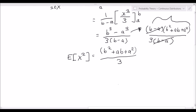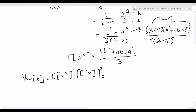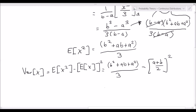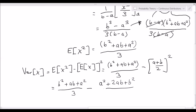But we're not done yet. The variance of x is equal to the expected value of x squared minus the square of the expected value of x. So we plug in: b squared plus ab plus a squared over 3, minus the expected value of x — which is a plus b over 2 — squared. We end up with the variance of x equal to b squared plus ab plus a squared over 3, minus a squared plus 2ab plus b squared, all over 4.